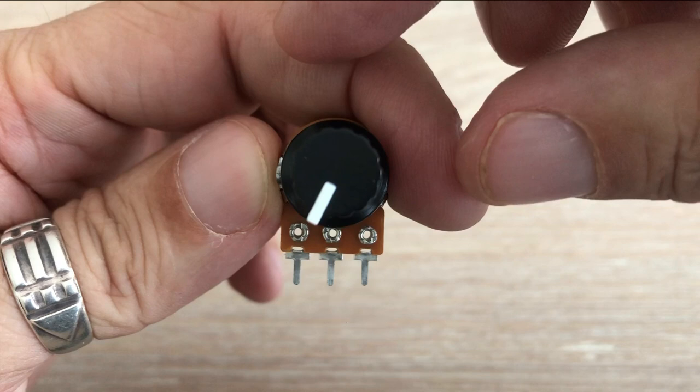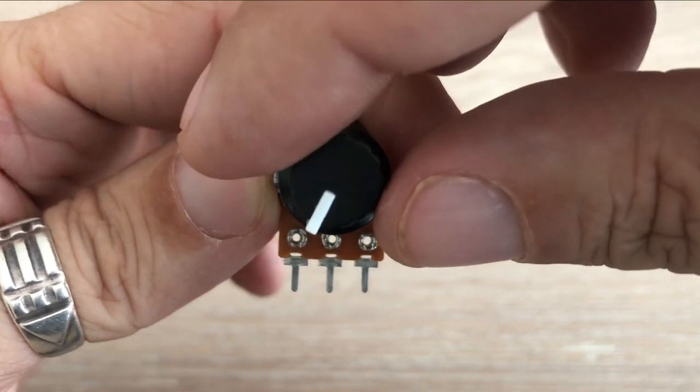We can connect just two legs of the potentiometer, the input one and one of the outer ones. In this case potentiometer is nothing more than a variable resistor whose resistance changes with shaft rotation.